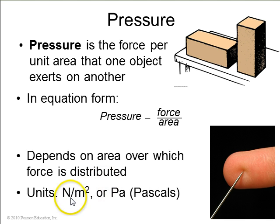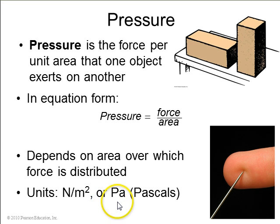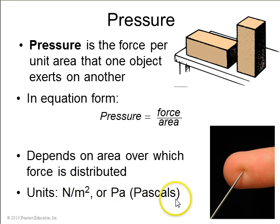Its units are newtons per meter squared, which is the same thing as a pascal. One pascal equals one newton per meter squared.